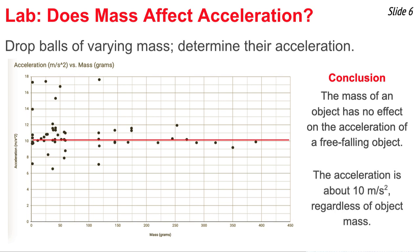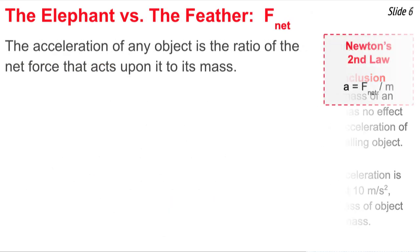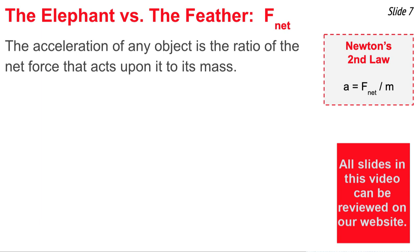In fact, the accelerations of these objects tend to be right around 10 meters per second squared, regardless of the mass. So we've seen through several examples that the mass of an object does not affect the acceleration. But let's ask the question, why? Why is it that mass has no effect upon acceleration? And this is where Newton's second law comes in.